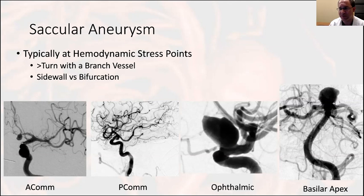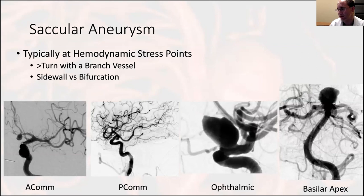A saccular aneurysm typically occurs at a hemodynamic stress point — a turn — and usually there's a branch vessel associated with that turn. Typical examples include the ACOM, the PCOM, ophthalmic aneurysms, true sidewall aneurysms, and at the far bottom right, a basilar apex aneurysm — a true bifurcation aneurysm. These are hemodynamic phenomena occurring at stress points with an associated branch.